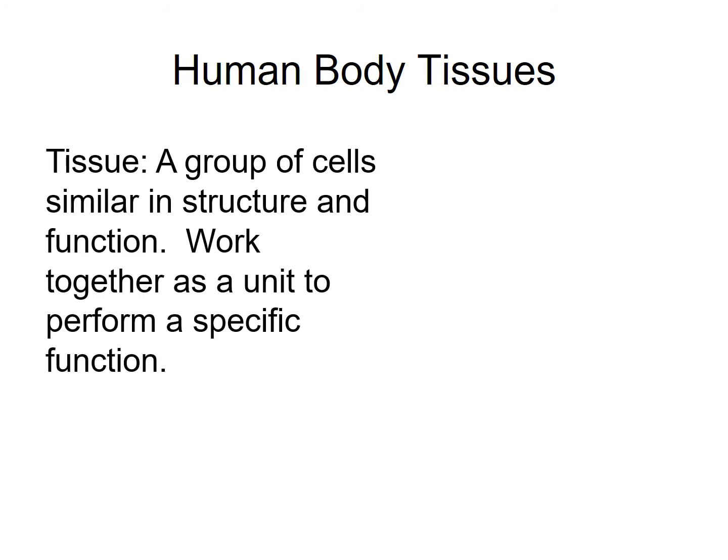Let's start our discussion on human body tissues by first defining what a tissue is. A tissue is a group of cells similar in structure or anatomy and function or physiology. They work together as a unit to perform a specific function.